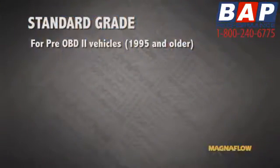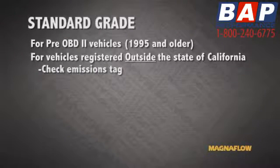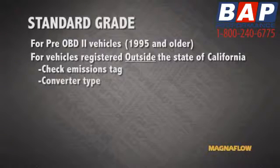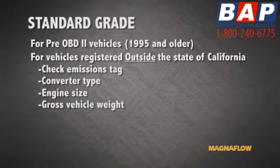For pre-OBD2 vehicles — those 1995 and older — we have our standard grade. For 49-state applications registered and operated outside the state of California, you'll need to first reference the emissions tag to determine what type of converter is on the vehicle: a two-way, three-way, or three-way plus air. You can also find the engine size and gross vehicle weight there. Once we have all that, we can use one of our reference tools to select the right converter.